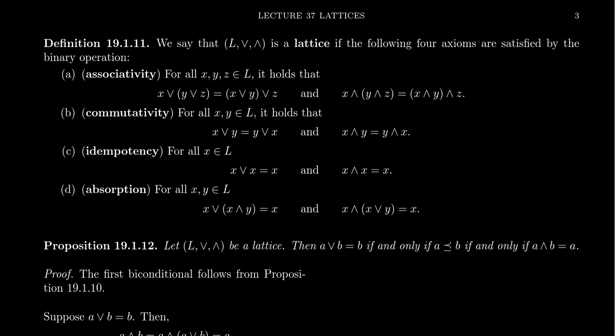The four axioms go as follows. We require that both operations, meet and join, are associative. So for any elements x, y, and z, you have that x join (y join z) is the same thing as (x join y) join z. And then the same holds for meets: x meet (y meet z) is equal to (x meet y) meet z.